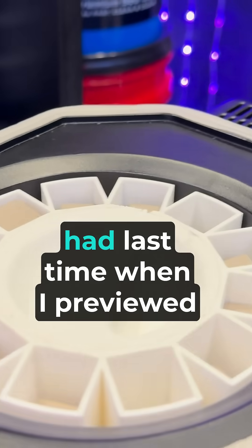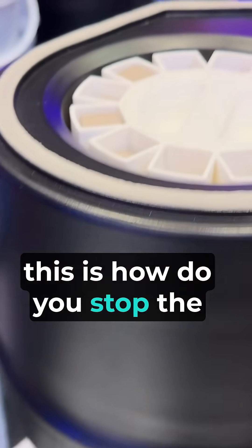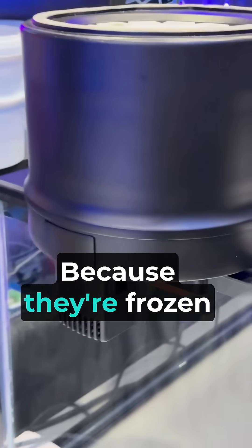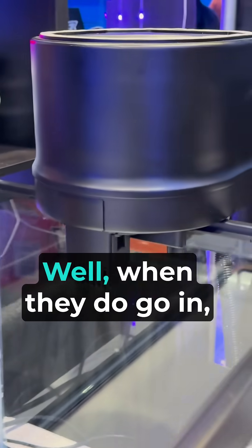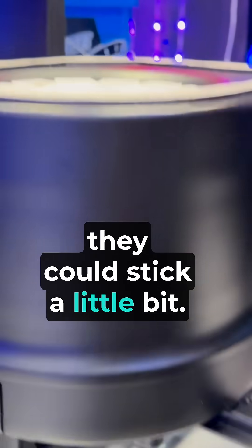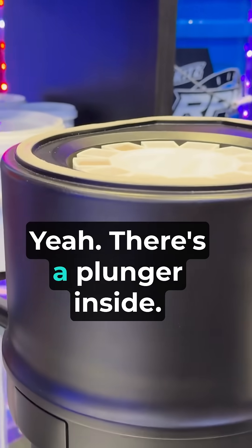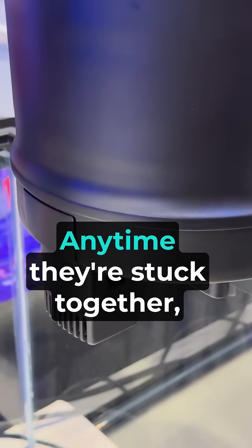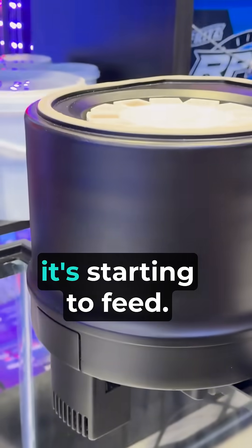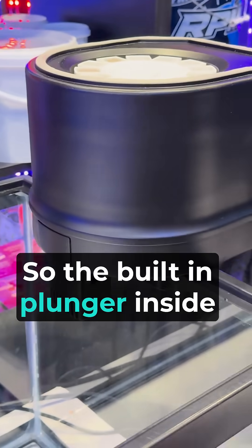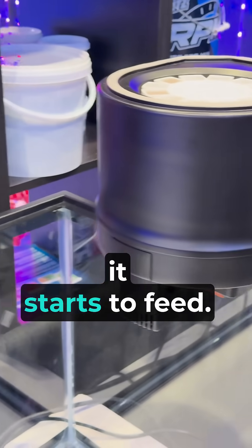The biggest question people had last time when I previewed this is how do you stop the cubes from sticking to each other because they're frozen on top of each other. Well, when they do go in, they could stick a little bit. But there's a plunger inside. Anytime they're stuck together, it can break them apart when it's starting to feed. So the built-in plunger inside breaks them apart when it starts to feed.